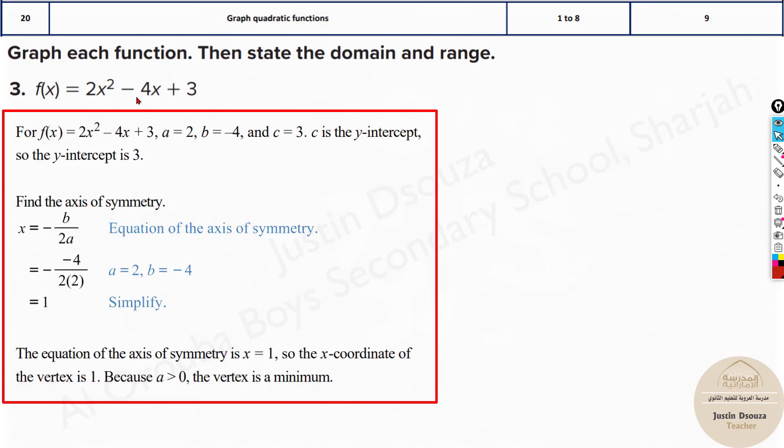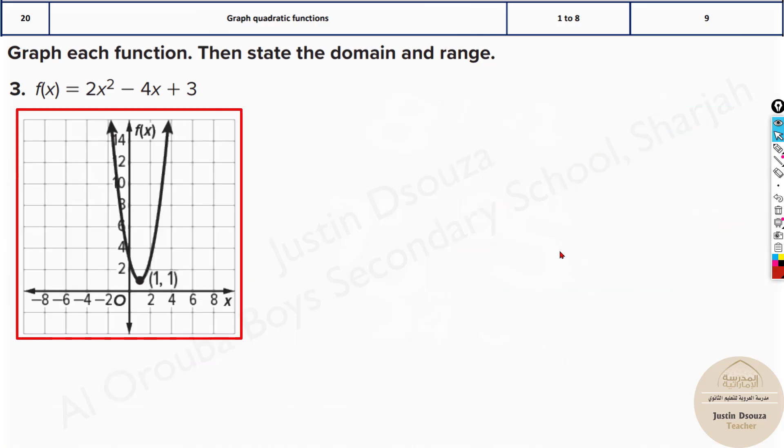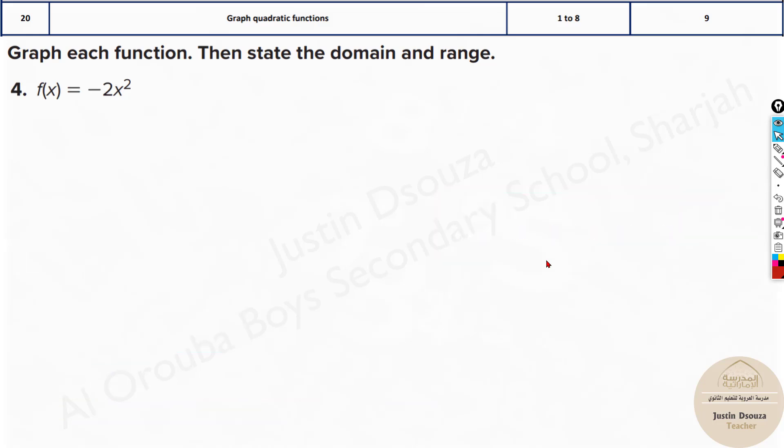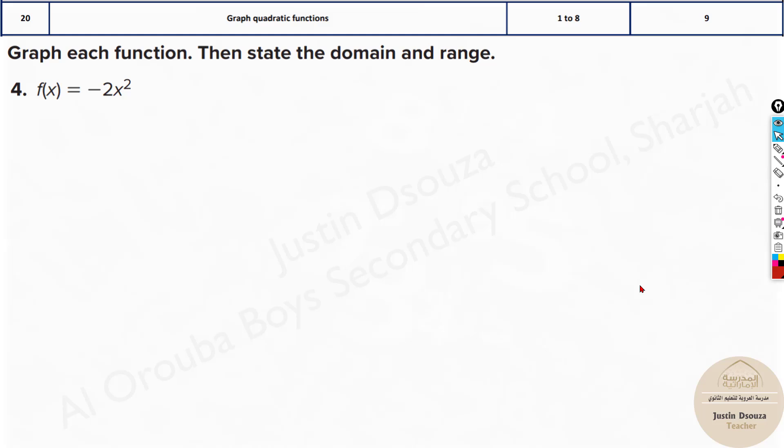See over here, for the vertex, it's -b. See, this minus is there, again minus is there. It'll be positive, final answer. b is 4, and 2 times a, a is again 2. So it'll be 4 by 4, that is 1. And then we do the table and graph it up. Please try graphing all these problems by yourselves. I'll just quickly go through all the solutions.